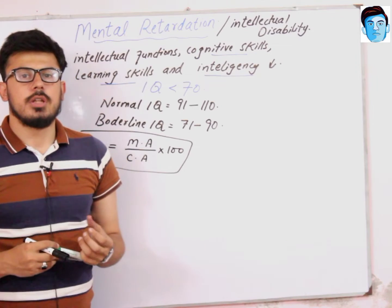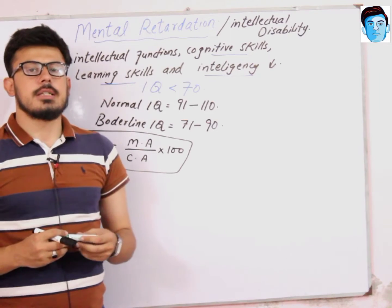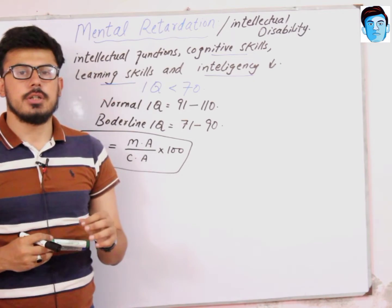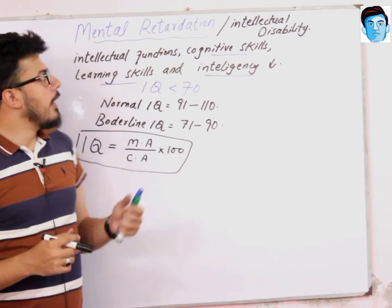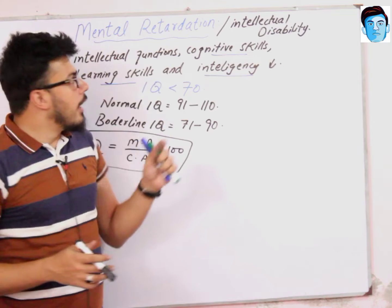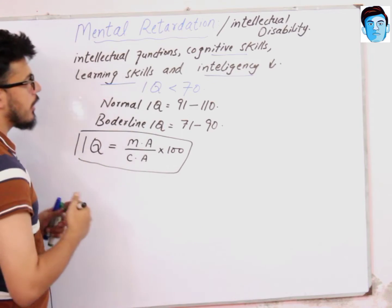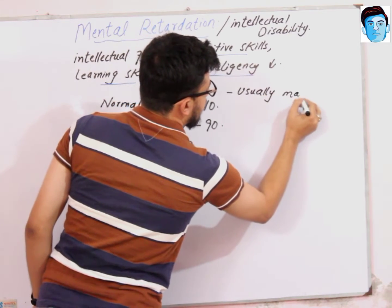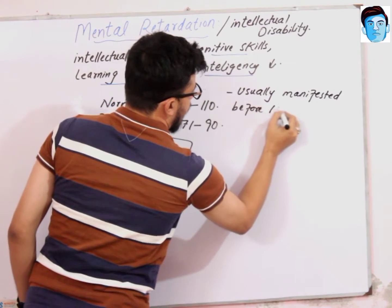Mental retardation is more associated with genetic diseases like Down syndrome, Fragile X syndrome, and Hurler syndrome, but the most common association is with Down syndrome. It is also reported that mental retardation is more common in boys compared to girls, and it usually manifests before 18 years of age.